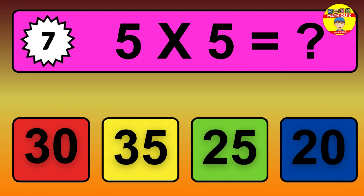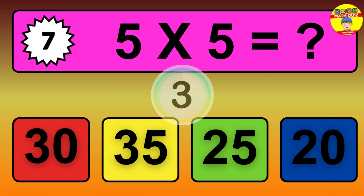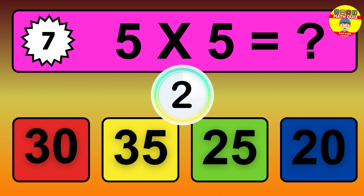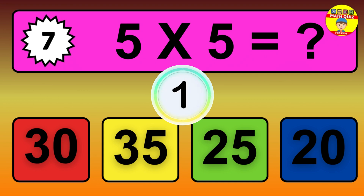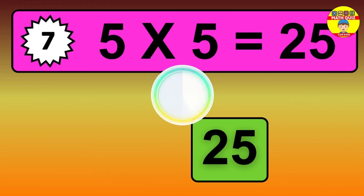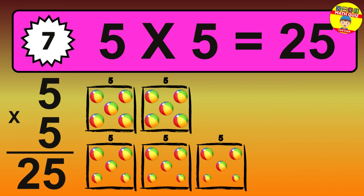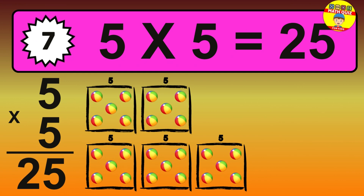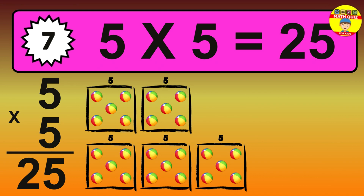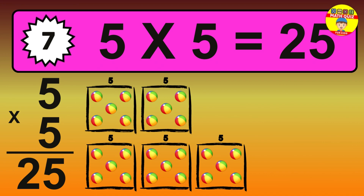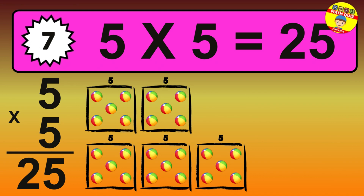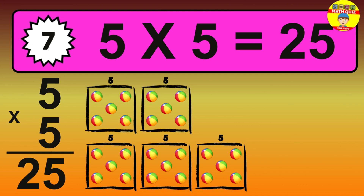Question 7. 5 times 5 equals what? The answer is 5 times 5 is 25. To calculate, we have 5 groups with 5 balls each. So how many balls do we have? 25 balls.